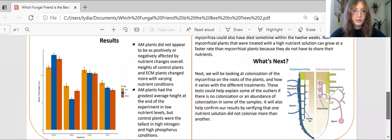On the bottom left chart, you can see the mean final height for the plants and on the x-axis you can see that on the left side of the chart is the high nutrient levels and on the right side of the chart is the low nutrient levels. The yellow is AM, the blue is the control with no mycorrhiza, and the orange is the ECM.